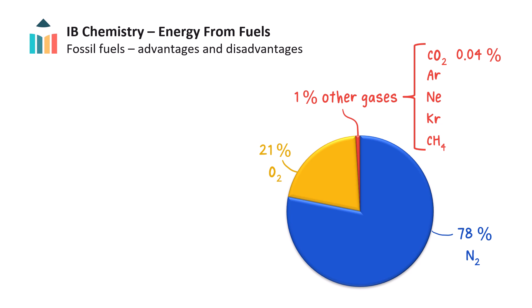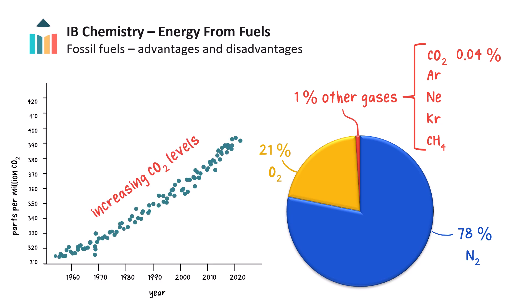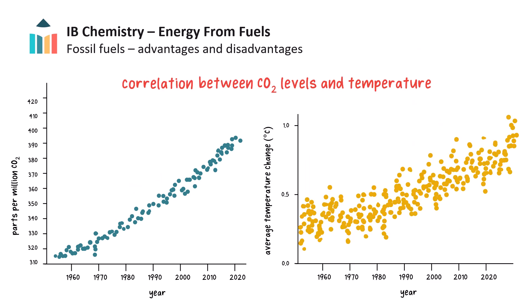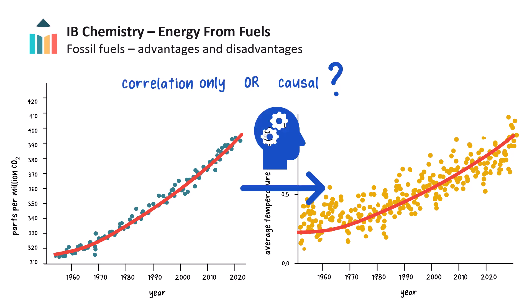Although this gas comprises only 0.04% of the atmosphere, some scientists believe that increasing levels from fossil fuel combustion could be a reason for the data suggesting global warming by the greenhouse effect. The increase in carbon dioxide levels in the atmosphere over time is correlated with an increase in average global temperatures, as we can see from the same general shapes of these two curves. However, recently some scientists debate whether this correlation is causative or not; not all scientists agree that there is a link between increasing carbon dioxide levels and global temperatures.